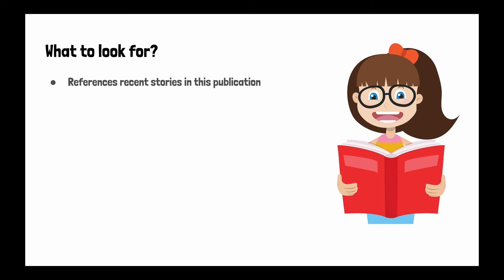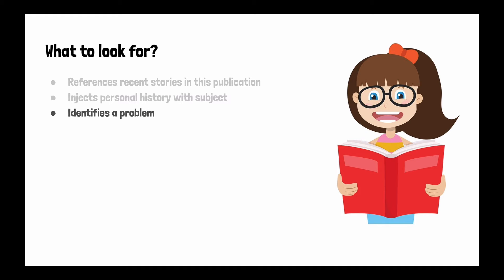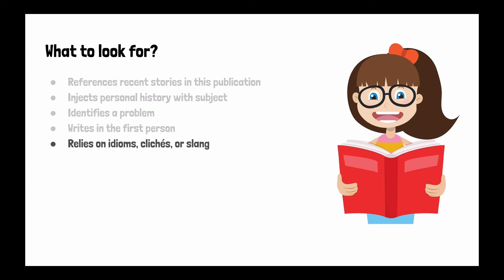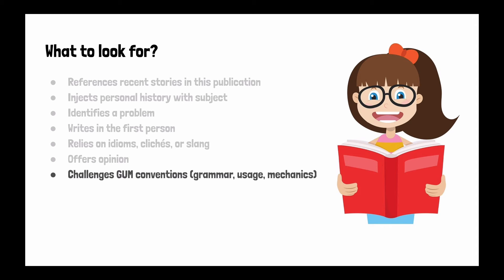So how can you tell it's op-ed? First, read. But there are some things you can look for: one is references to recent stories in the publication; two, it would be interjected with personal history on the subject; it would identify a problem; it would be written in the first person in a lot of cases, but not always. Op-eds rely on catchy phrases and clichés, and generally an opinion is something to look for. They will use some clever mechanics in terms of writing style that you will not see in straight-up reporting.